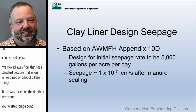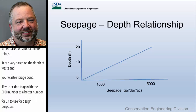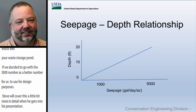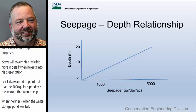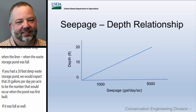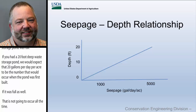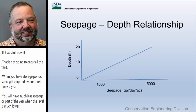We decided the 5,000 gallons per acre per day number is a better figure for design purposes, and Steve will cover this in more detail in his presentation. That 5,000 gallons per day is basically the amount that would seep when the waste storage pond is full — for example, a 20-foot deep pond at full depth. That's not going to occur all the time because we empty storage ponds; some get emptied two or three times a year, so seepage is much less when the level is lower and increases as the pond fills.